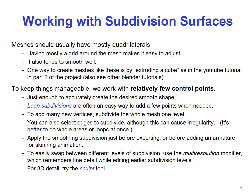Meshes should usually have mostly quadrilaterals. Having mostly a grid around the mesh makes it easy to adjust and it always tends to smooth well. One way to create meshes like these is by extruding a cube, as in the YouTube tutorial in part 2 of the project. Also see other Blender tutorials on this. To keep things manageable, we work with relatively few control points — just enough to accurately create the desired smooth shape.